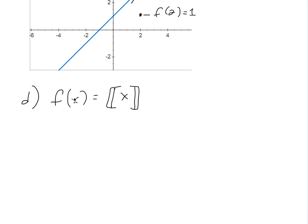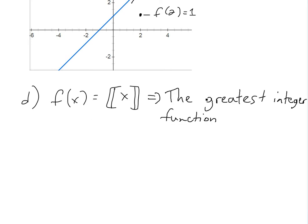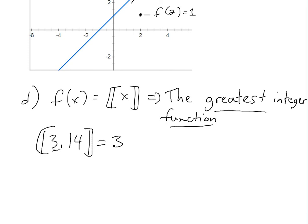Example (d): f(x) = ⌊x⌋, the greatest integer function. As I showed in an earlier video, this just takes any number and rounds down to the greatest integer — so ⌊3.14⌋ = 3. An integer is any whole number, positive, negative, or zero.